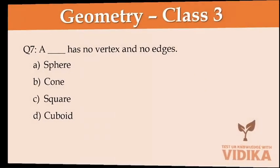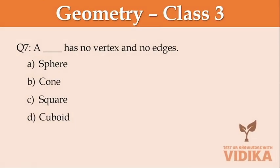A dash has no vertex and no edges. Option A sphere, option B cone, option C square, option D cuboid.